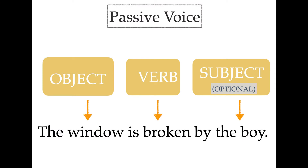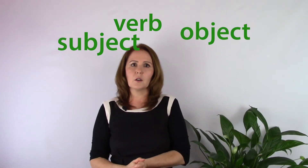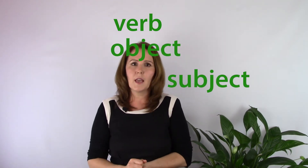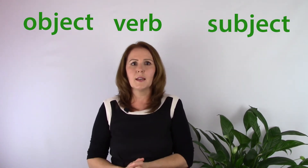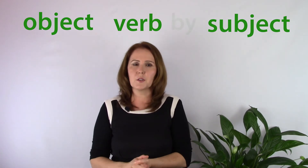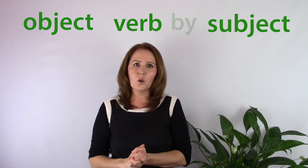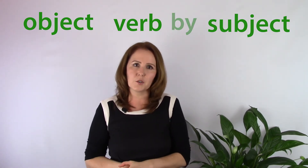Passive voice: 'The window is broken by the boy.' The window is the object, 'is broken' is the verb, and the boy is the subject. In the passive voice, the object goes to the first place and the subject comes after the verb. Sometimes we can use the preposition 'by' to show who or what is performing an action.